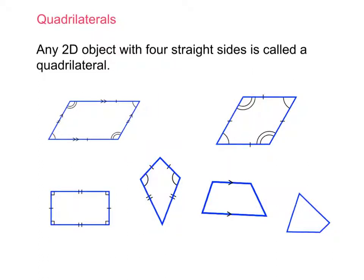Welcome to quadrilaterals. A quadrilateral is any 2D object — two-dimensional, so a flat object — with four straight sides. It's pretty straightforward. A quadrilateral is any 2D object with four straight sides, and we've got some examples here below that we'll be going through.